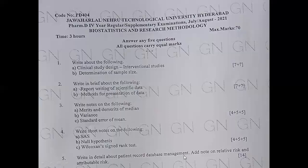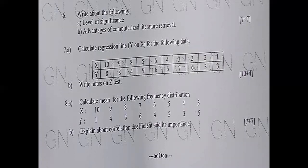Coming to the fifth question — write in detail about patient record database management, and a note on relative risk and attributable risk. These are also pure theory questions for 14 marks, discussed in regular classes and videos are available. For question six — level of significance: the 0.01 and 0.05 levels, and how whenever you get any finding, you explain whether your work is significant or not — whether 95% of the population is covered or 5% is true.